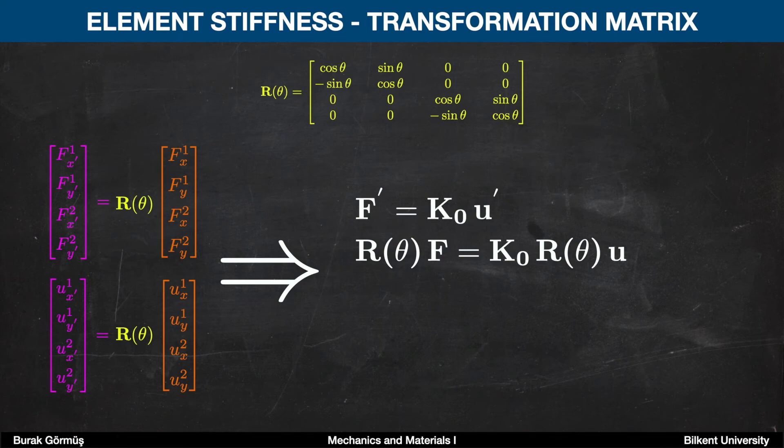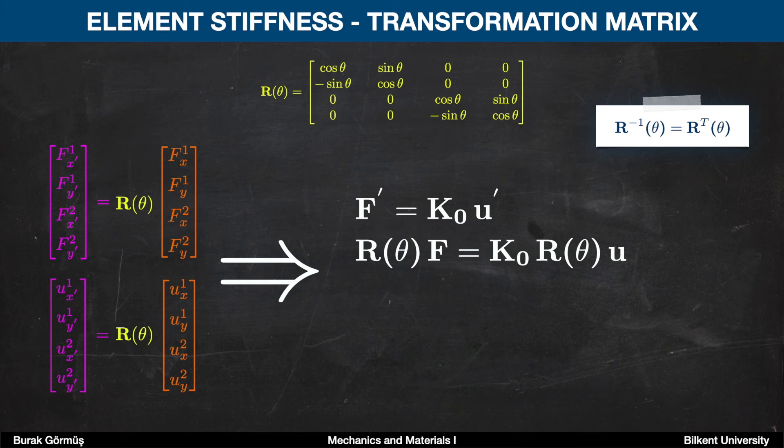Before proceeding, one important feature about the transformation matrix is that the inverse of the transformation matrix is indeed equal to its transpose. Hence, by multiplying the equation from the left with the inverse transformation matrix, I mean the transpose of the transformation matrix because they are the same thing, we can obtain this equation.